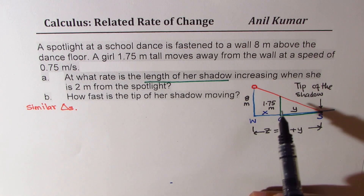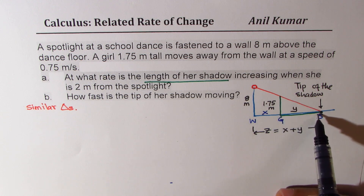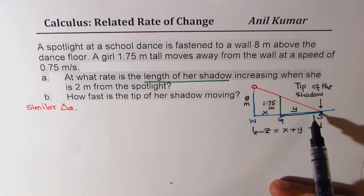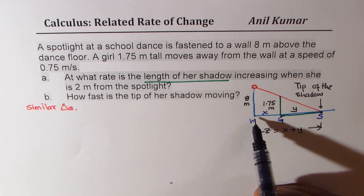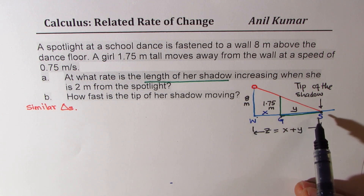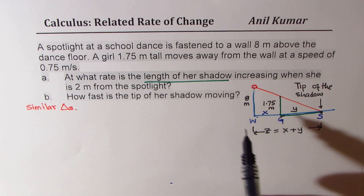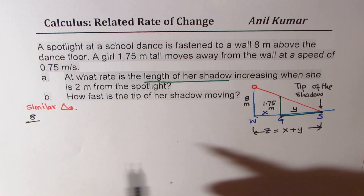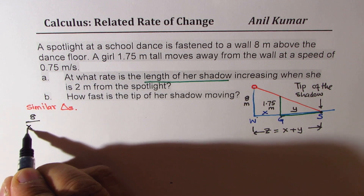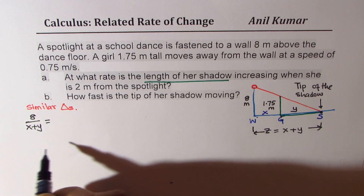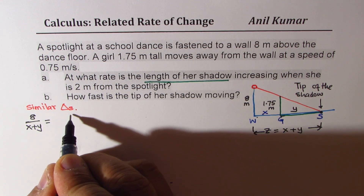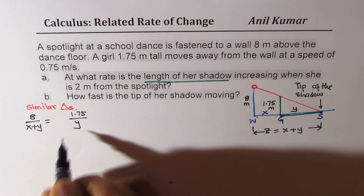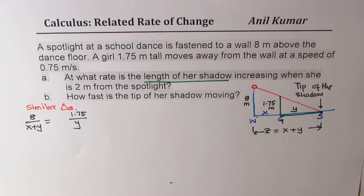Now, which two triangles are similar? The small one formed with the girl's height and shadow, and the bigger one — the wall and the total tip-of-shadow length. That gives you the equation: 8 over (x + y) equals 1.75 over y.